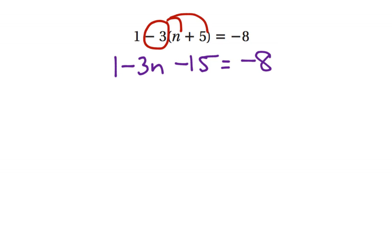Now we see our variable is n, specifically negative 3n, and we want to isolate it. If there's anything on the same side of the equal sign that we can combine, we want to do that first.